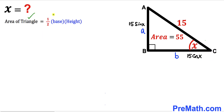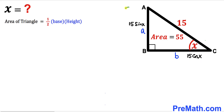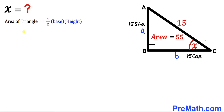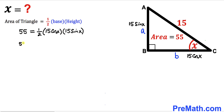Now let's recall the area of a triangle formula: area equals one half times base times height. In our case, the base of this triangle is 15 times cosine of X and the height is 15 times sine of X, and the area has been given to us as 55. Filling in the formula: 55 equals one half times 15 cosine X times 15 sine X. Multiplying 15 times 15 gives us 225, so we can write 55 equals 225 divided by 2 times sine of X times cosine of X.